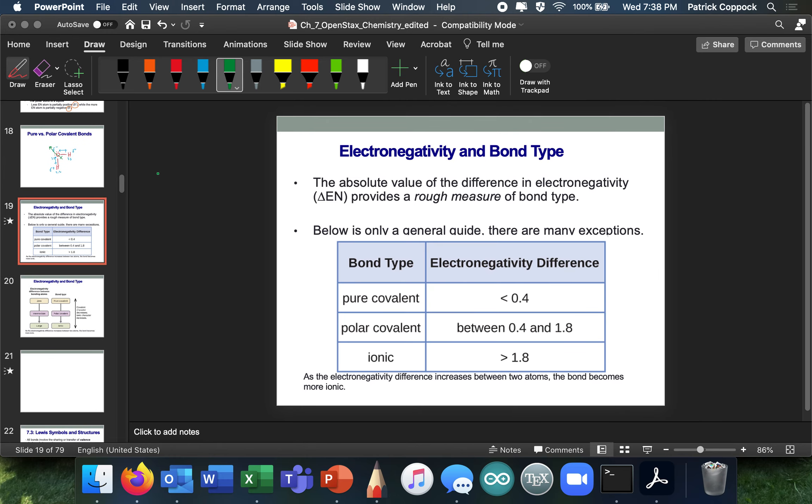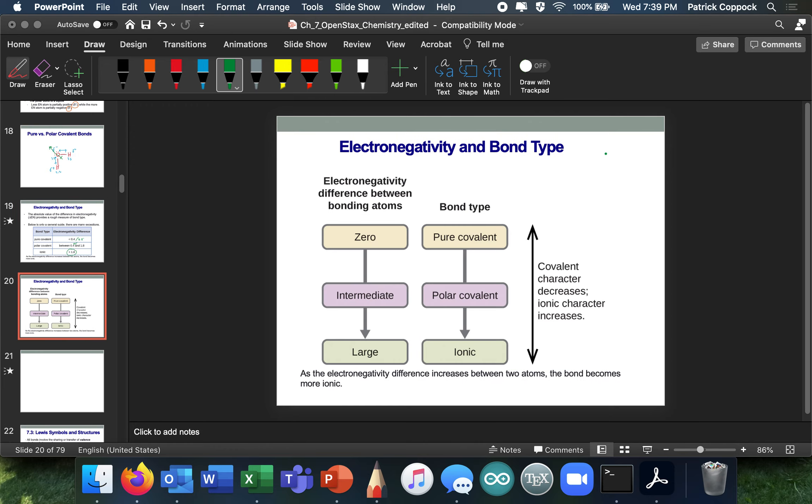So electronegativity, now, this is a general rule of thumb. The absolute value of the difference provides a rough measure of the bond type. Purely covalent, it's going to be if it's less than 0.4. Sometimes people put less than 0.5. Polar covalent, it's going to be if it's between 0.4 or 0.5 and 1.8. Sometimes people say 1.7. Anything greater than 1.8, electronegativity difference of greater than 1.8 is going to make ions. At some point, the electronegativity's difference is so much that the more electronegative element just steals the electrons and it becomes an ion.